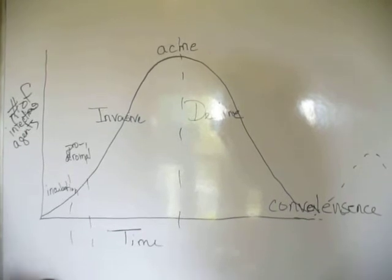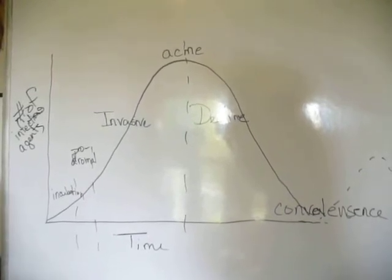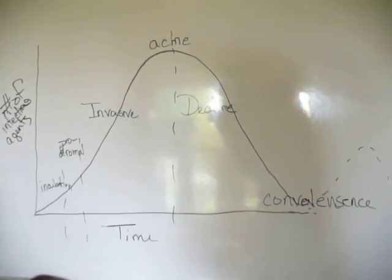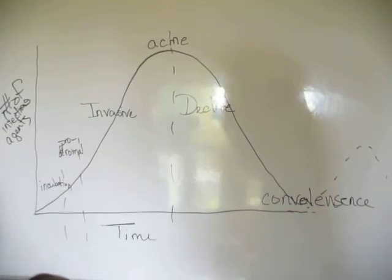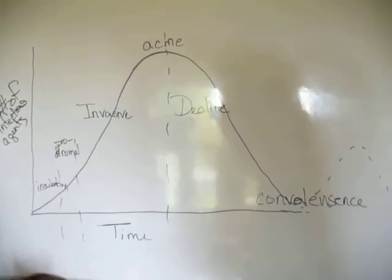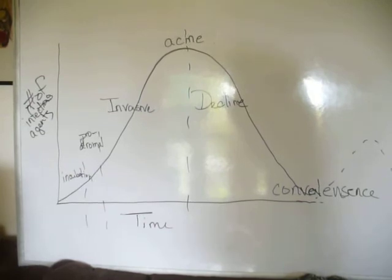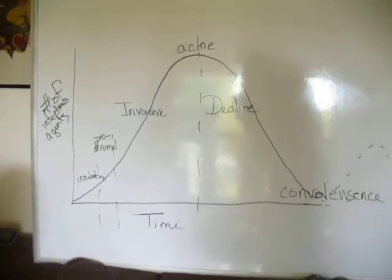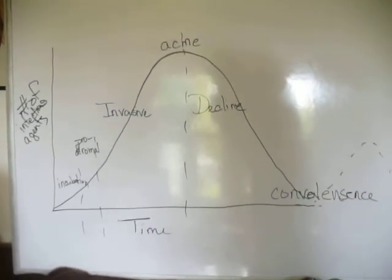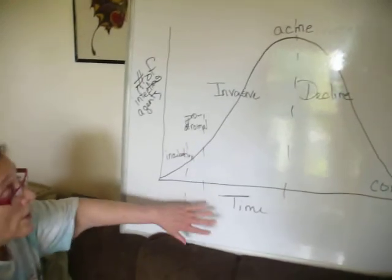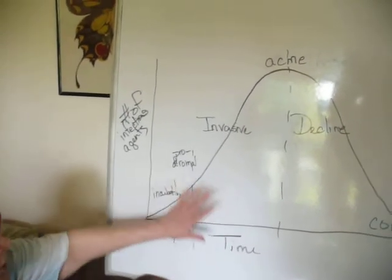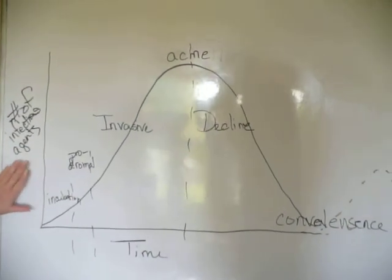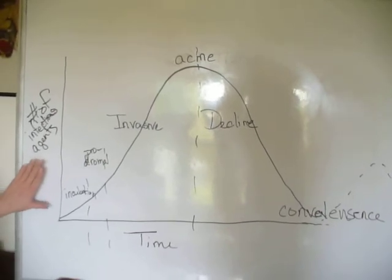Do not confuse this with the stages of a viral infection — those are different. A virus attaches, a virus injects either the whole virus or the nucleic acid, then replication and production of proteins occurs, then assembly of new viruses, and finally lysis and release. Do not confuse that with the overall general occurrence of any type of disease, be it viral, bacterial, from a protist, or whatever.